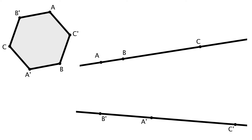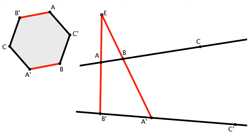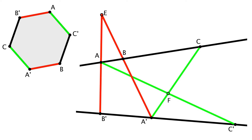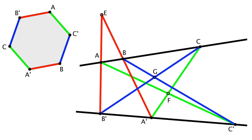If you can handle that, stay with me, because what Pappas does next is he associates opposite sides of the hexagon and transfers that relationship onto what we'll call the projection — this new representation for associations. He continues this process for the other two pairs of opposite sides, and the result is three points of intersection that are collinear.